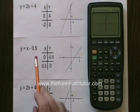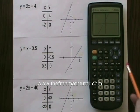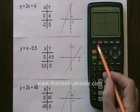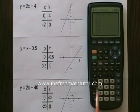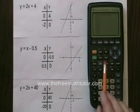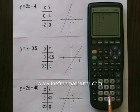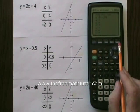Now let's try entering the second line, y equals x minus 0.5. I'm going to go into the y equals, and I'm going to press clear to remove the first equation. Now I'm going to enter y equals x minus 0.5. The y equals is already there, so I press x minus 0.5, and I press graph.